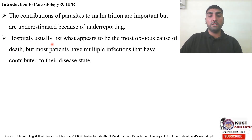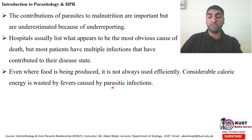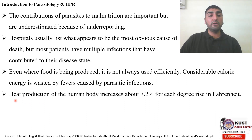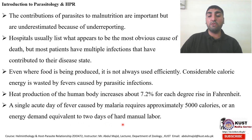Hospitals usually list what appears to be the most obvious cause of death, but most patients have multiple infections that have contributed to their disease state. Even where food is being produced, it is not always used efficiently. A considerable amount of caloric energy is wasted by fevers caused by parasitic infections. Heat production of the human body increases about 7.2% for each degree rise in Fahrenheit, so a single acute day of fever caused by malaria requires approximately 5,000 calories — an energy demand equivalent to 2 days of hard manual labor.